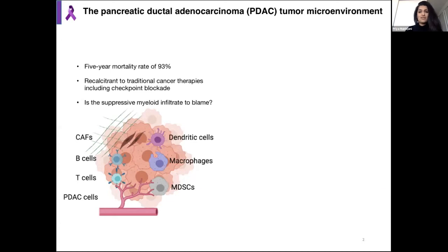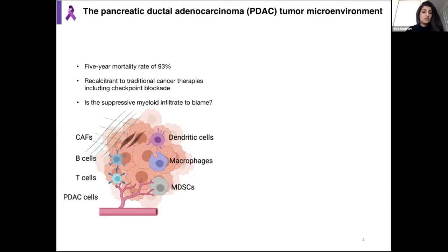This poor mortality is due to a recalcitrance to traditional cancer therapies, including checkpoint blockade. Checkpoint blockade has been a blockbuster therapy for many different tumor types because it's able to turn on a T-cell mediated immune destruction of the tumor. The reason this doesn't work in PDAC is thought to be due to an immune suppressive tumor microenvironment.